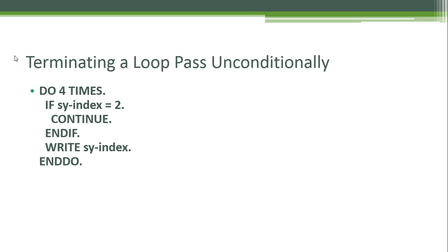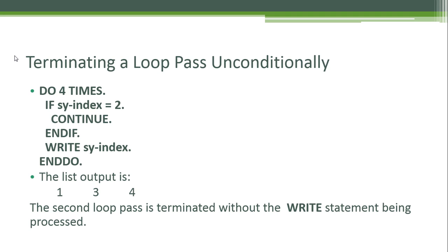For example, to terminate a loop pass unconditionally: DO four times, IF SY-INDEX equals 2, CONTINUE. This means do not process the next line of the loop — in this case the WRITE statement — and continue to the next pass of the loop. The list output in this algorithm would be 1, 3, 4. It doesn't print 2 because when SY-INDEX equals 2, the second loop pass is terminated without the WRITE statement being processed.